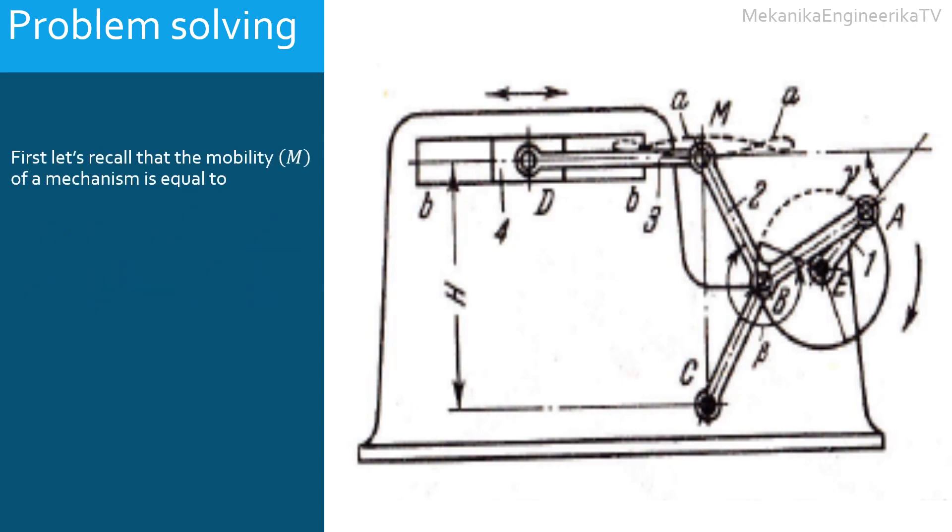First, recall that the mobility M of a mechanism is equal to 3 times L decreased by 1 minus twice J1 minus J2.